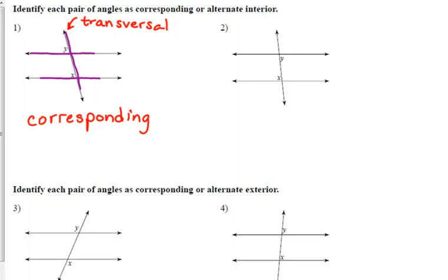Number two, those are alternate interior, keyword being alternate. Well, both of them are keywords. But first of all, alternate, they are on opposite sides of the transversal. Interior, they are inside the parallel lines.